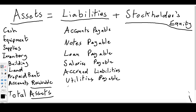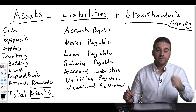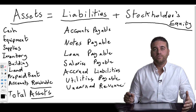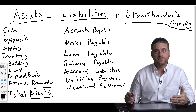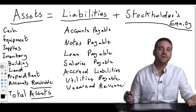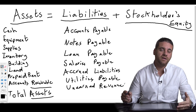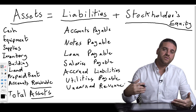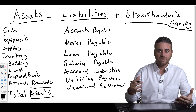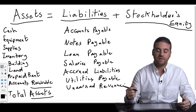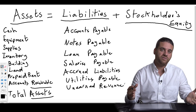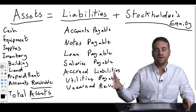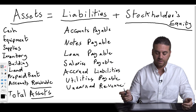There's one more account called unearned revenue. When a customer pays us money in advance for a service we will provide in the future, we become liable to provide that service. So that amount is a liability until we actually provide the service — it sits under unearned revenue until then.